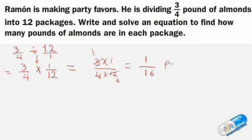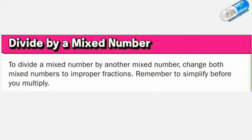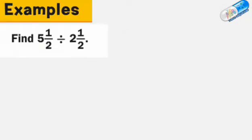To divide a mixed number by another mixed number, change both mixed numbers to improper fractions, then simplify before you multiply. In this example we have two mixed numbers divided by each other. To do the division, we first write each mixed number as an improper fraction.